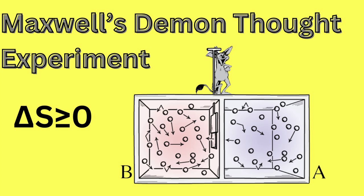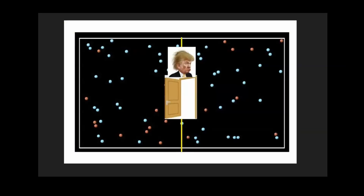Now we can explain Maxwell's demon thought experiment. Maxwell imagined a hypothetical creature, often referred to as Maxwell's demon, that exists within the isolated system. The demon controls a frictionless, fast-moving door placed in the partition.